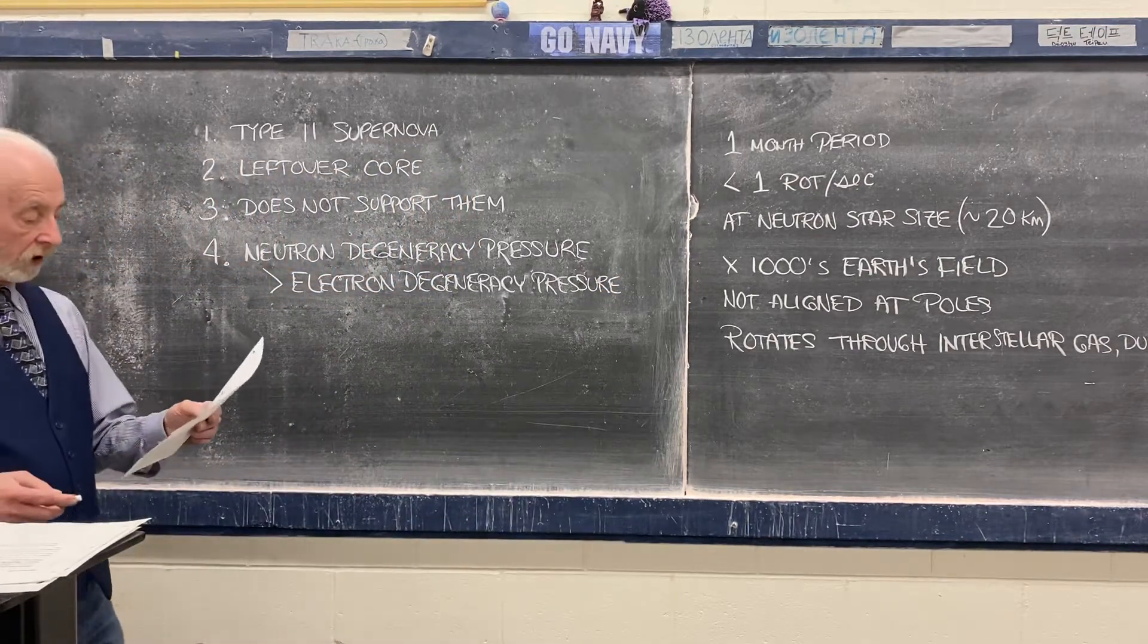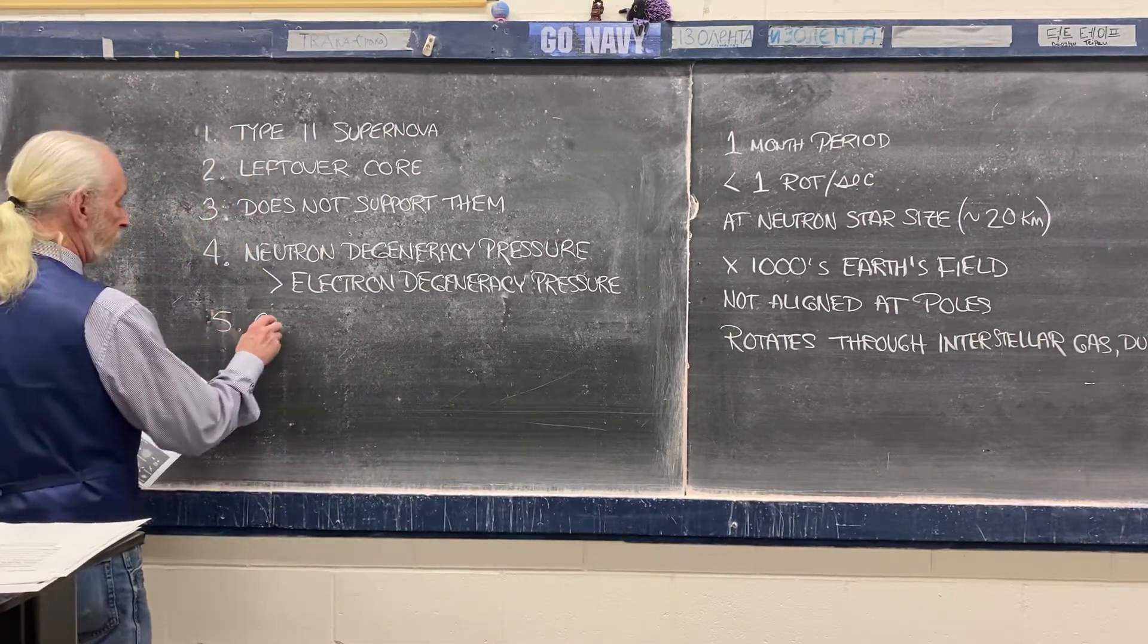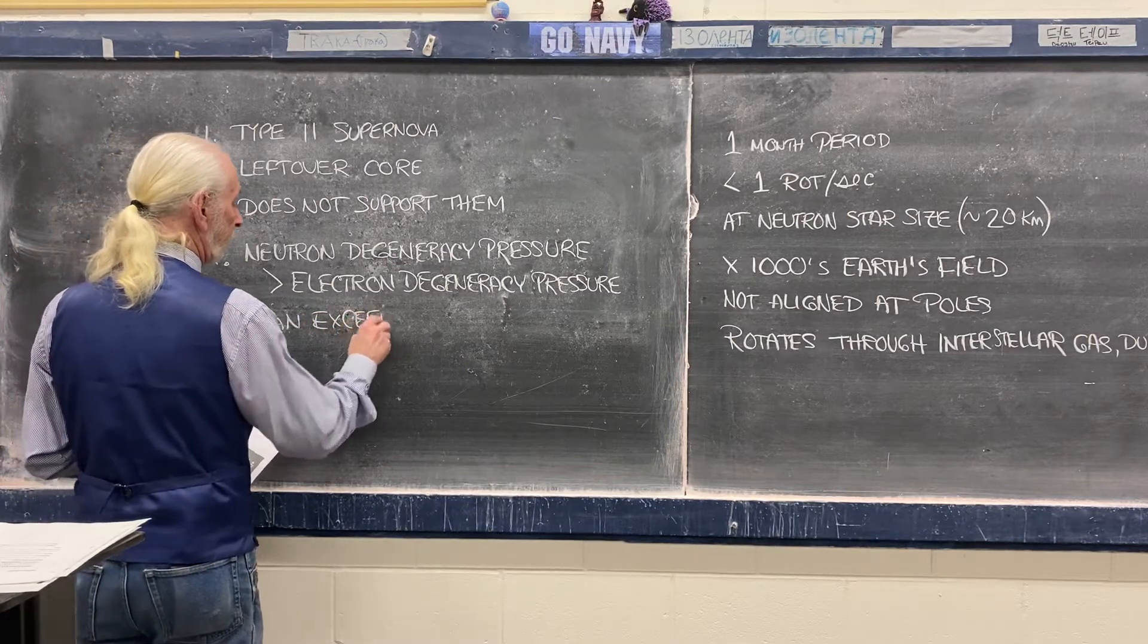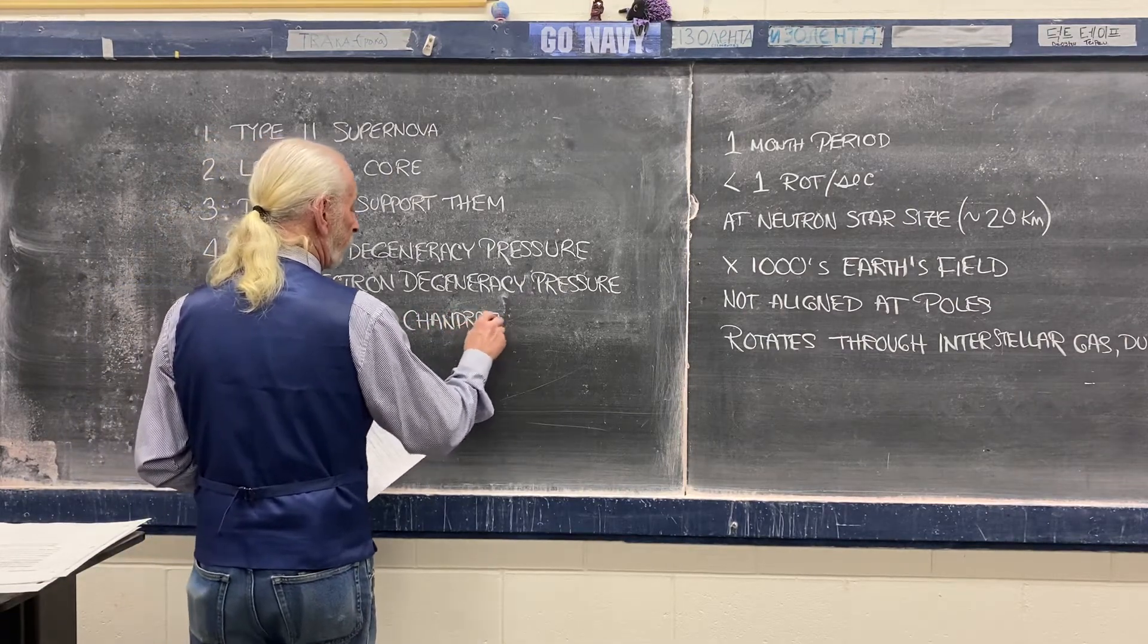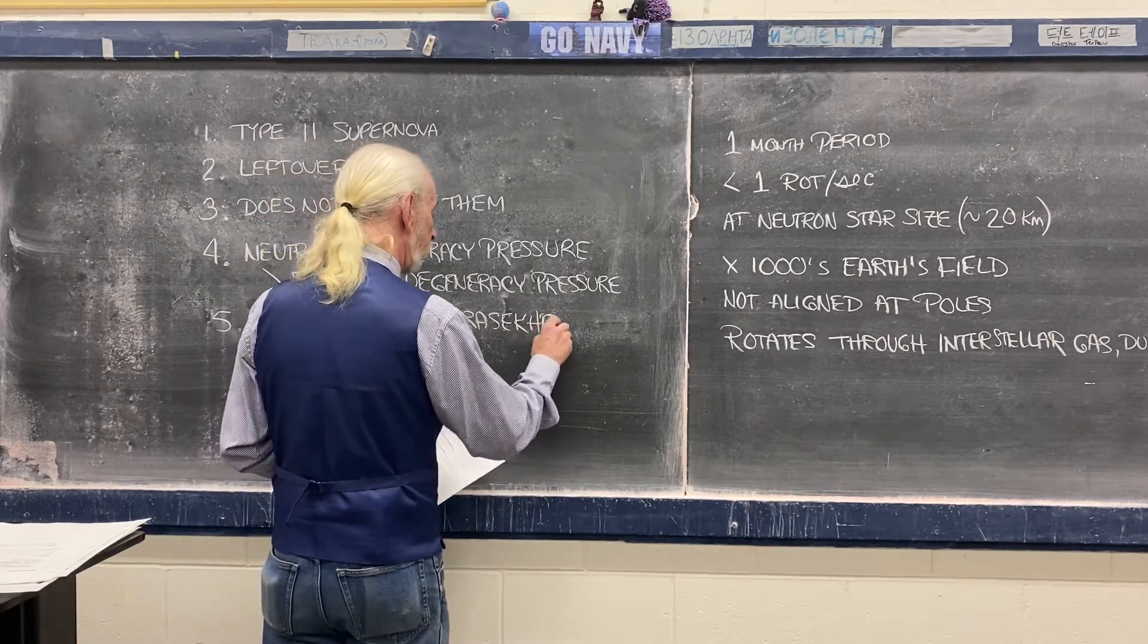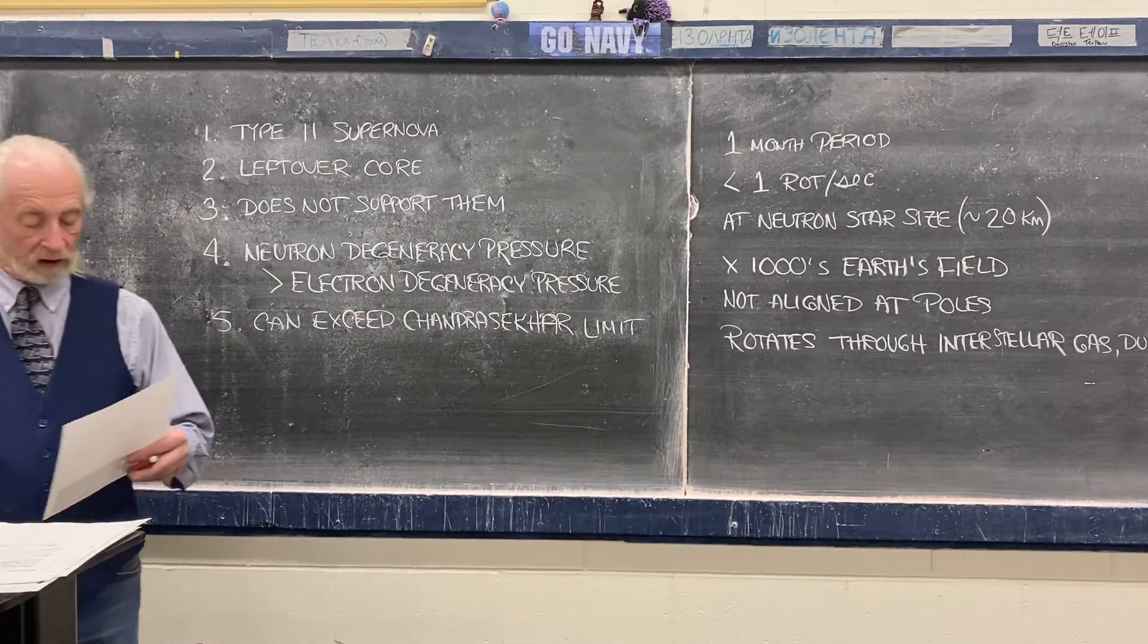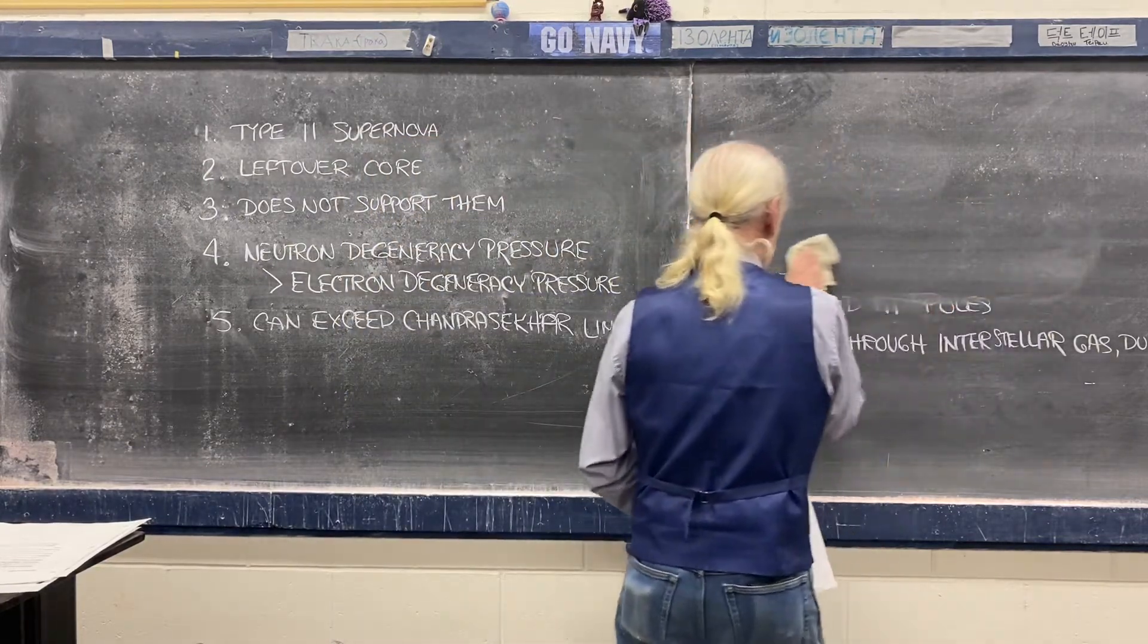Therefore, neutron stars can exceed the Chandrasekhar limit. All right, and they are at neutron density. We've talked about that. But now what I want to do is go to this last piece on the page.